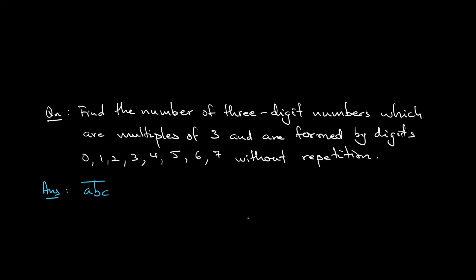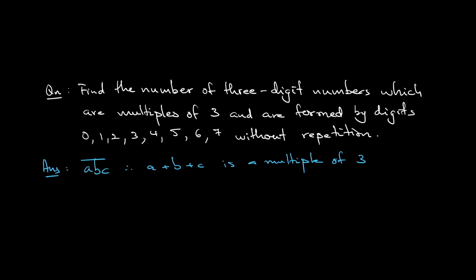So a plus b plus c is a multiple of 3. First thing first, the numbers 0, 1, 2, 3, 4, 5, 6, 7, if I divided by 3, the possible remainder is 0, 1, 2, the remainder 0, 1, 2, 0, 1 respectively.